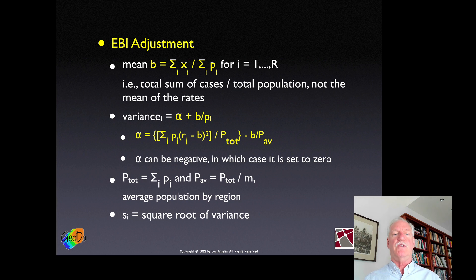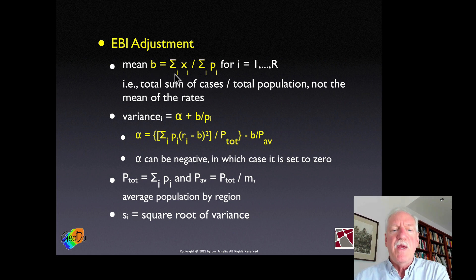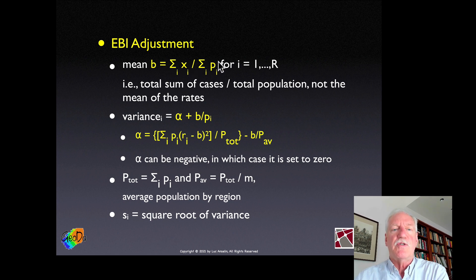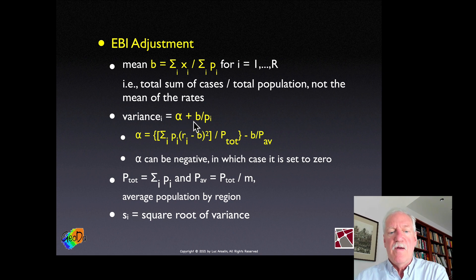What is the EBI adjustment? First, the mean: as we computed the excess risk in the previous lecture, the reference mean is not the average of individual rates but the sum of all events over the sum of all populations — that is the mean we subtract from the original crude rate. The second part is the individual variance, which consists of two components: an alpha term, and a straightforward term which is the overall mean b divided by the population p_i of the observational unit.